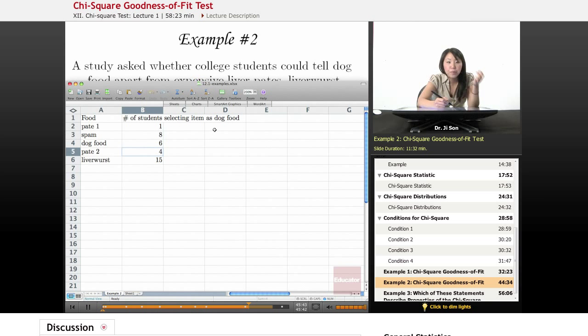you'll see the number of students that selected that particular item as dog food. Now, be careful because some people, you might get this problem on a test and you won't know that it's a chi-square problem. Sometimes people might immediately just think, I'll find the mean, right?